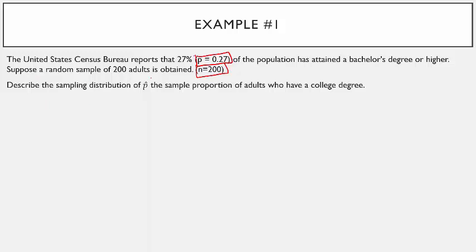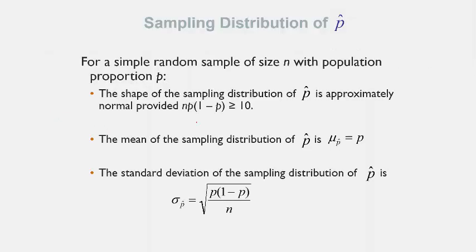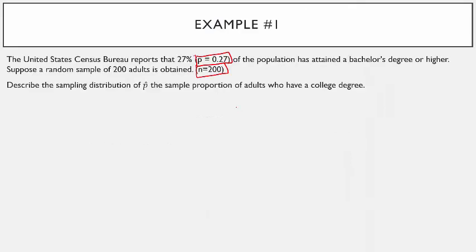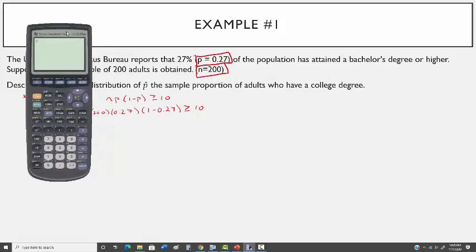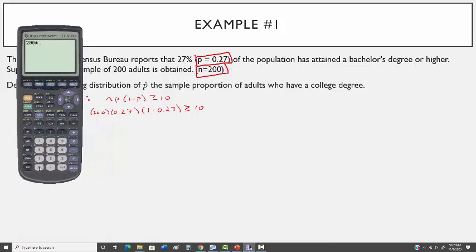The first question says: describe the sampling distribution of p-hat, the sample proportion of adults who have a college degree. We have to do the number check: n times p times (1 minus p) must be greater than or equal to 10. That's 200 times 0.27 times (1 minus 0.27), and we check this in our calculator.